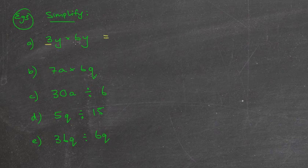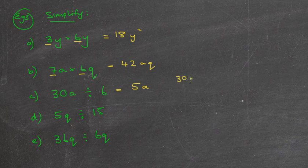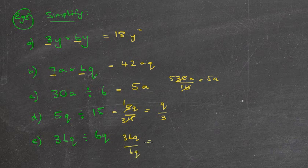Welcome back, guys. I hope you said 3 times 6 is 18, y times y is y squared. Next one, 7 times 6 is 42, a times q would just be aq. 30 divided by 6 equals 5, a divided by 1 is just a. Remember, you could write it like this and then cross that out once, cross that out 5 times, and it's still going to be 5a. Likewise, I'm going to write this one as 5q over 15. Well, 5 goes into 5 once, goes into 15 three times. I get 1q over 3. And then I'm going to do 36q over 6q. Well, 6 goes into 6 once, 6 goes into 36 six times. q's cancel out, so I'm just left with 6 over 1, which is just equal to 6.